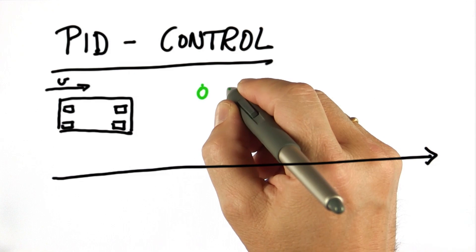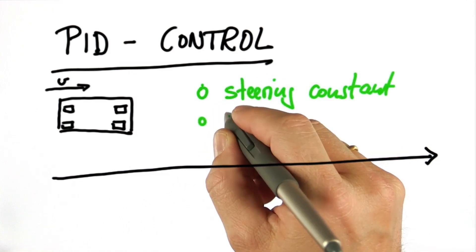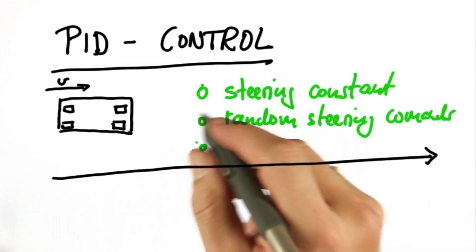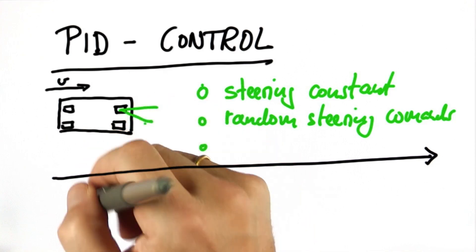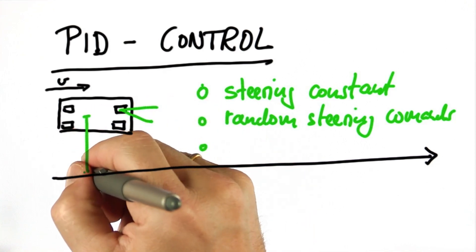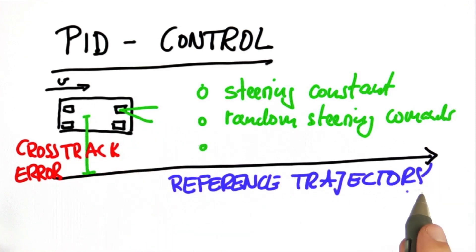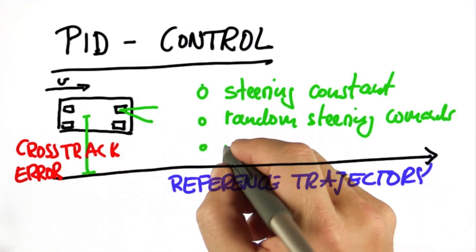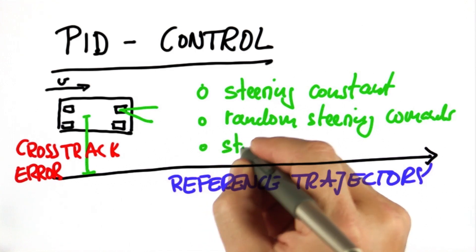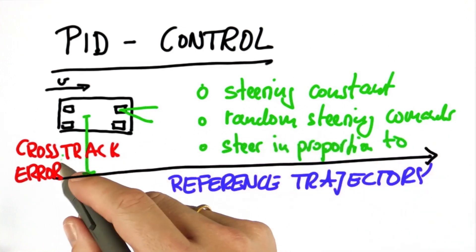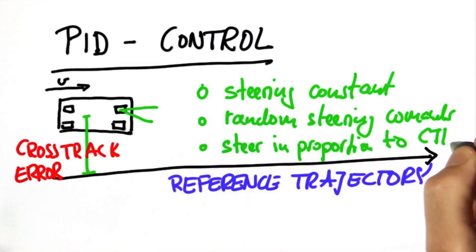How would you do this? You could keep the steering constant, you could do random steering commands, or you could set the steering angle in proportion to what's known as the cross-track error, which is the lateral distance between the vehicle and the reference trajectory. So the third possibility is to steer in proportion to this cross-track error, CTE.